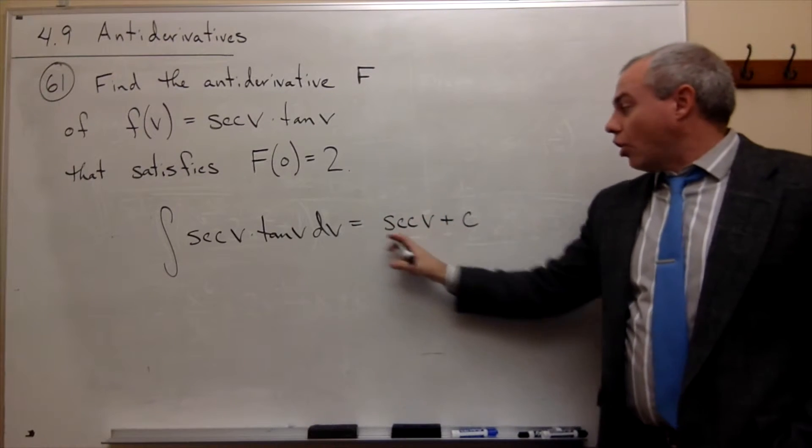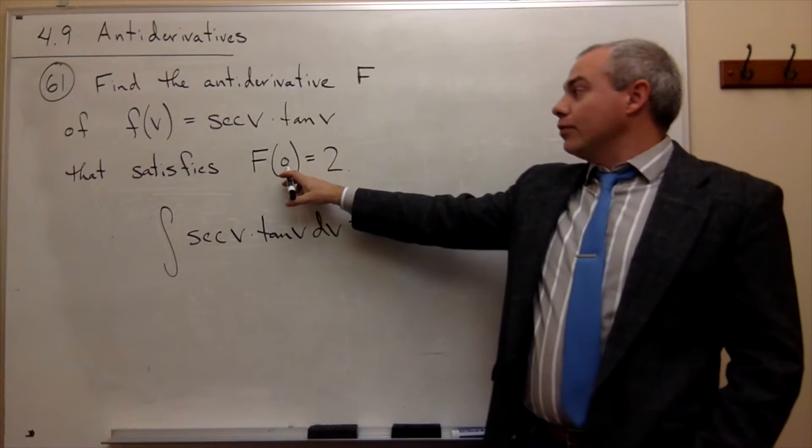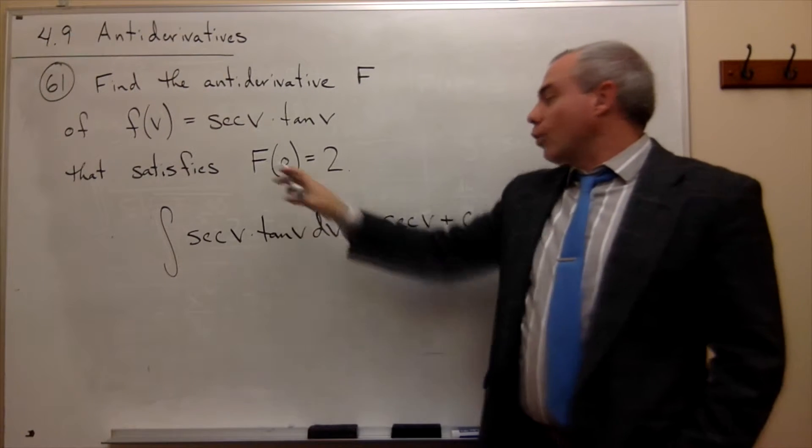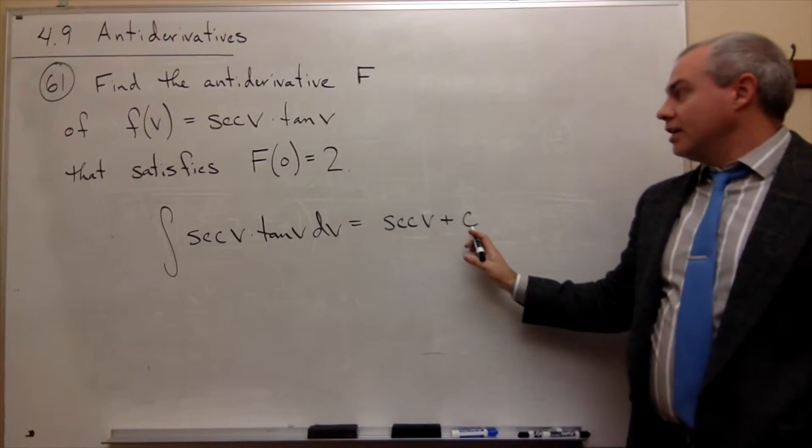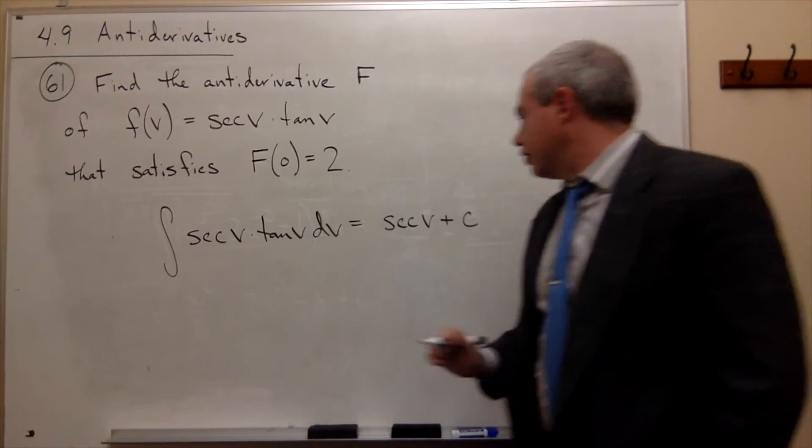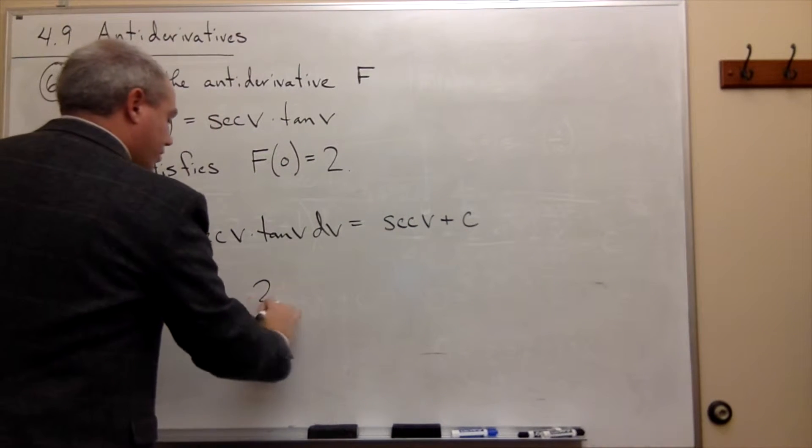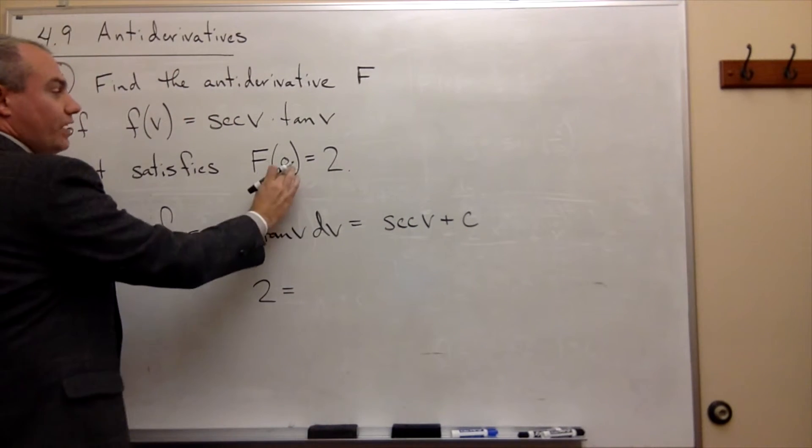So this is all of my antiderivatives, and I want to know if v were equal to 0, what would C have to be in order for F(0) to be equal to 2? In other words, I want to set this equal to 2 and plug in v = 0.